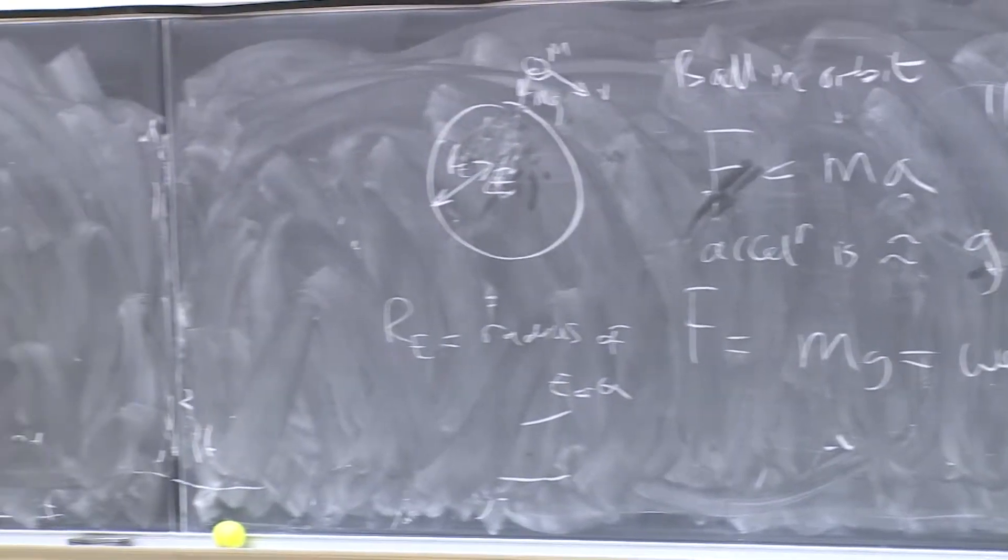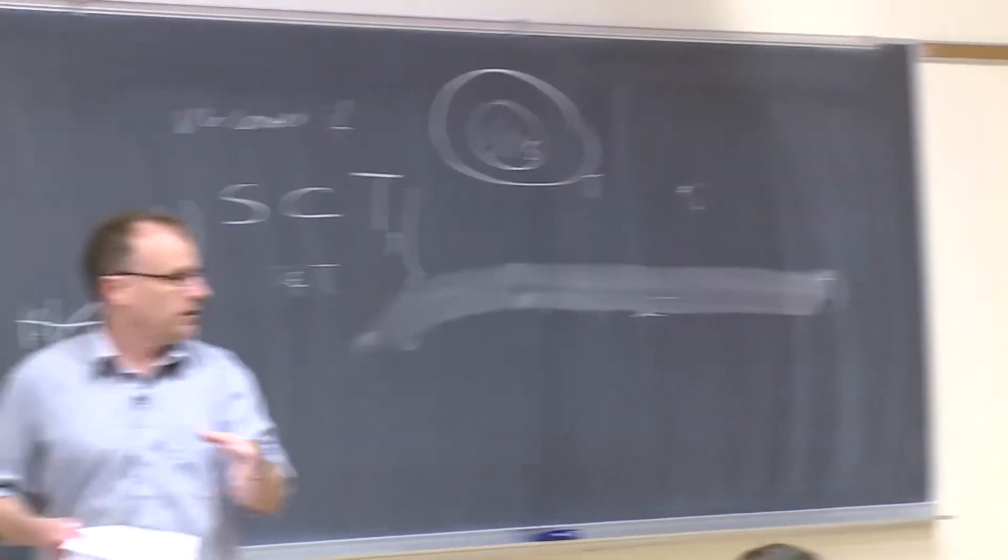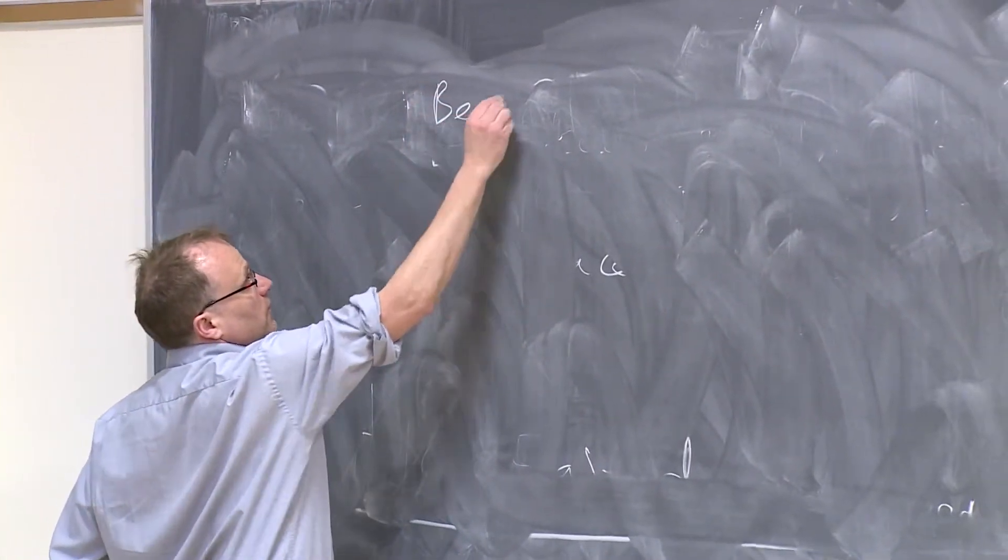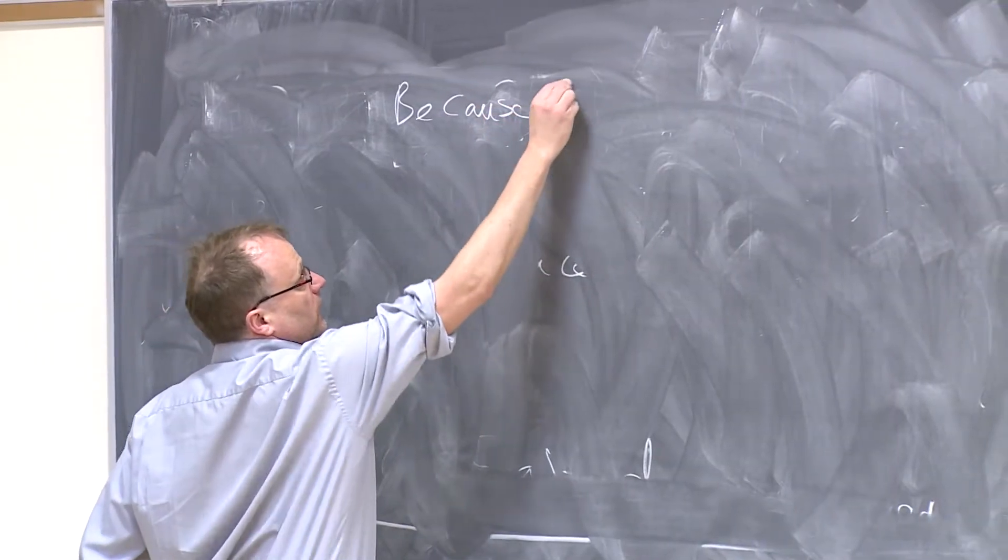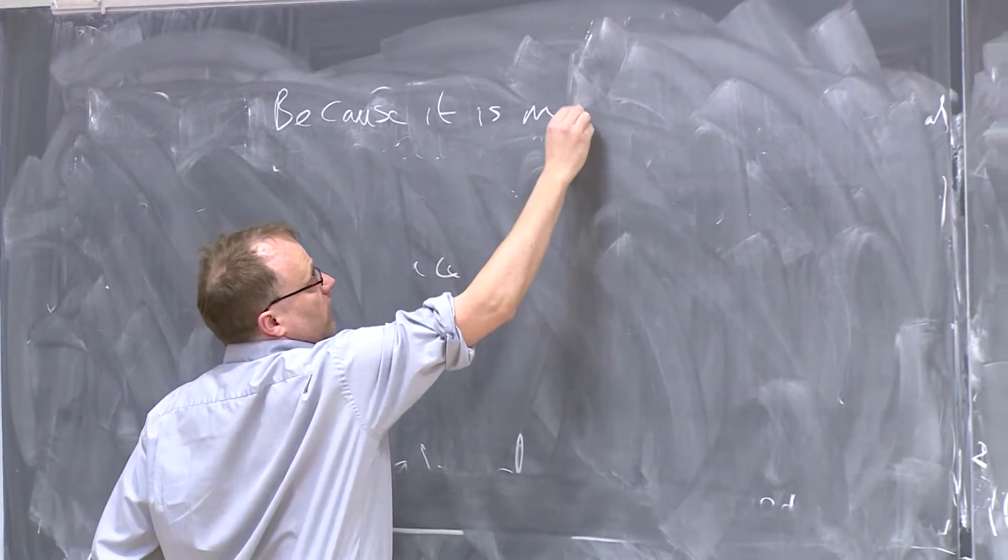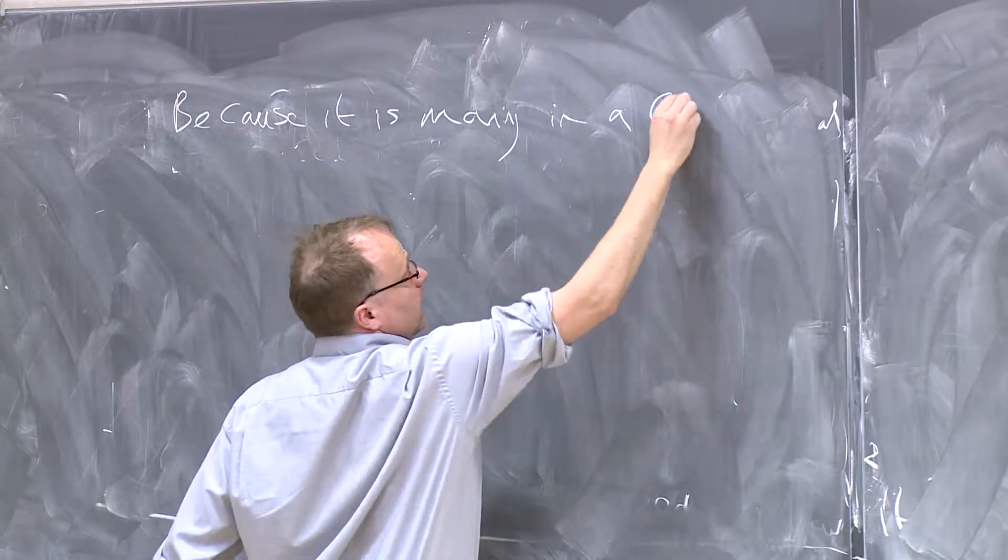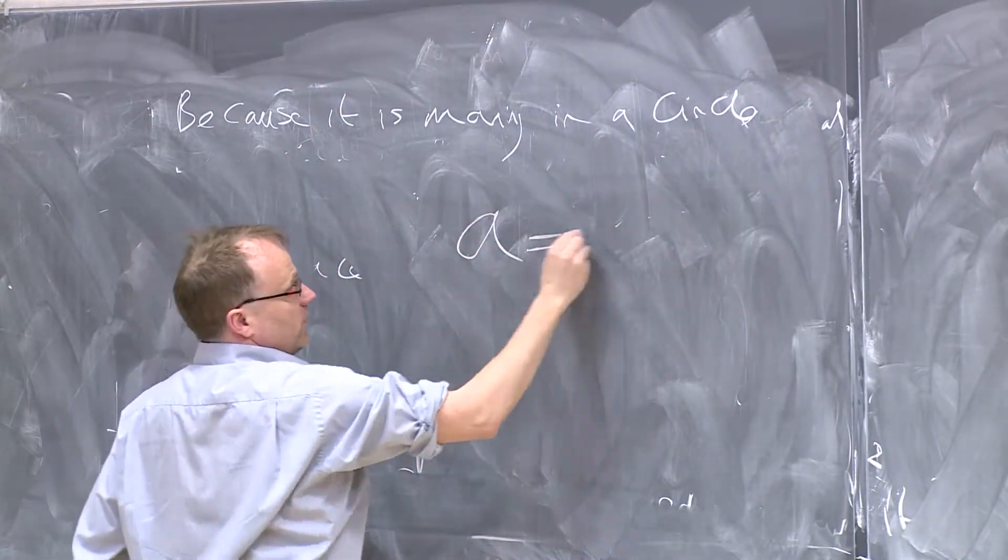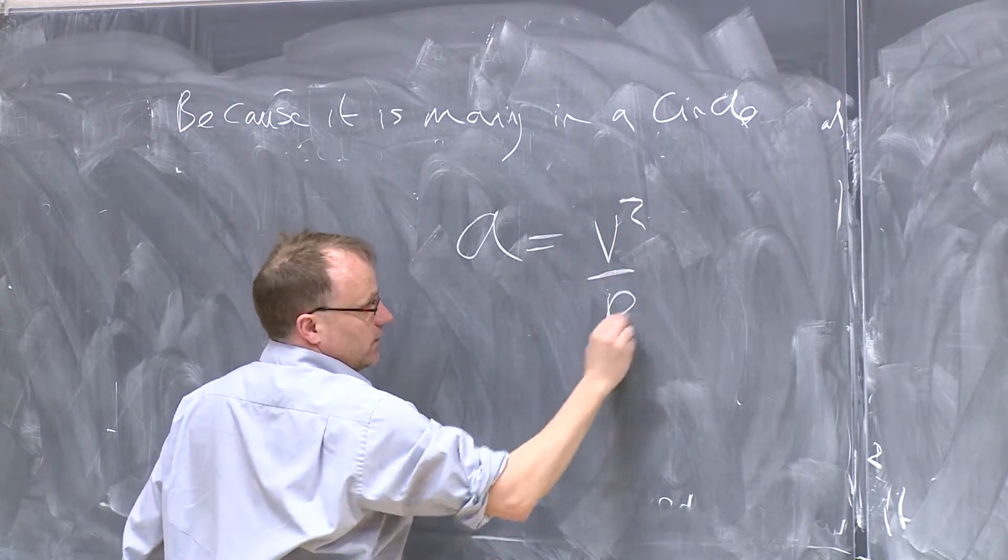But because it's moving in a circle, what's the acceleration? You said it, right? V squared over R. So because it's moving in a circle, we can say that A is equal to V squared divided by RE.